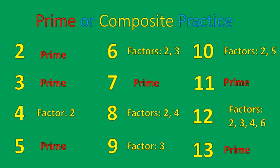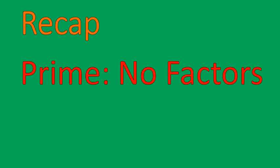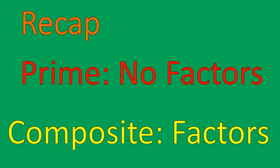So that is the difference between prime and composite numbers, with a little bit of practice thrown in. Quick recap: prime numbers have no factors other than one and themselves, and composite numbers have factors other than one and themselves. I hope that lesson was helpful for you on prime versus composite. Have a wonderful day.